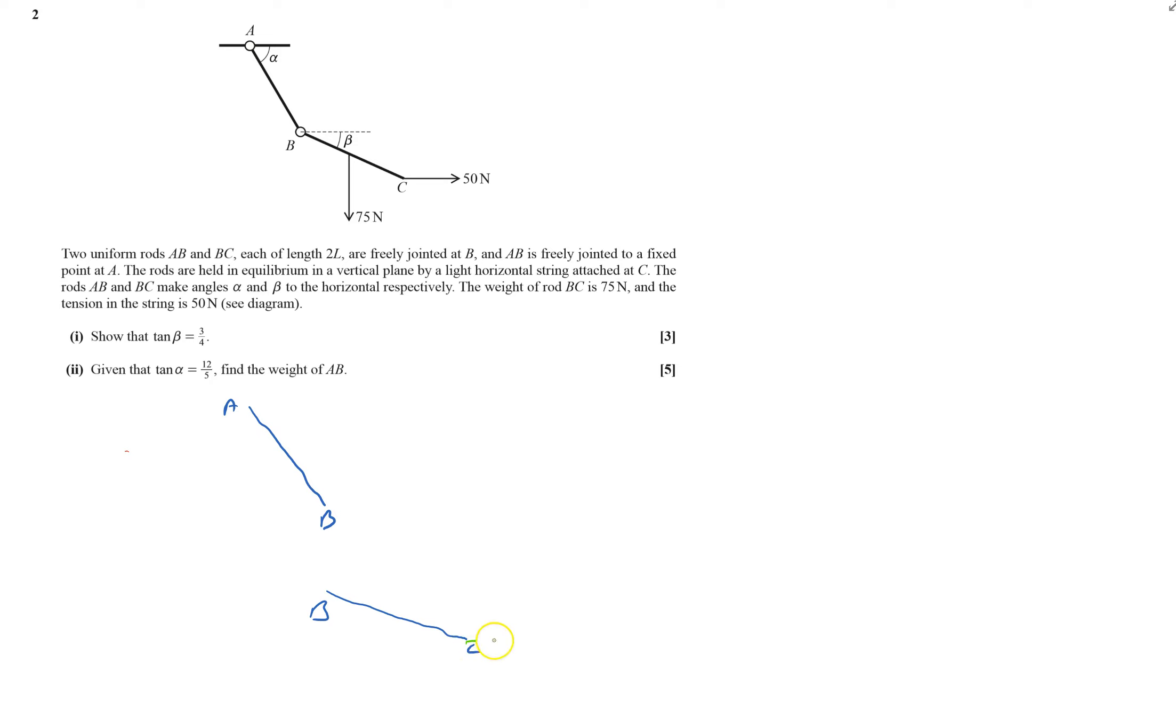So C, we've got 50 newtons going straight across there. We've got 75 newtons, the weight coming down here. What else do we know? We're going to have to find the weight of AB, so I'm going to put the weight, I normally put MG, but this one, since we asked for the weight, I'm going to put just W on there.